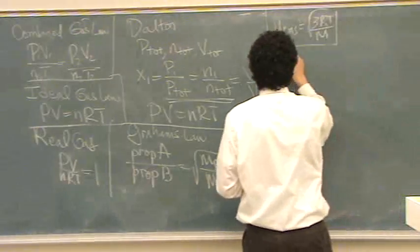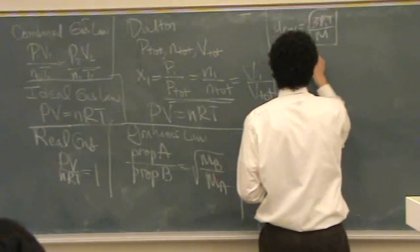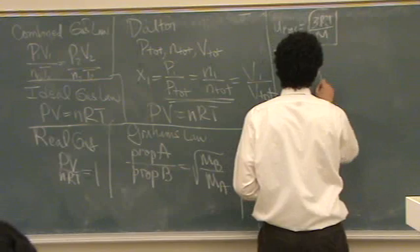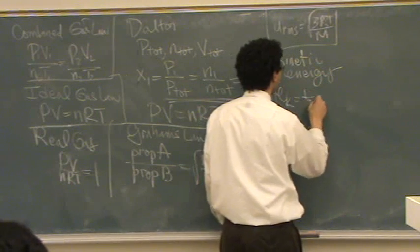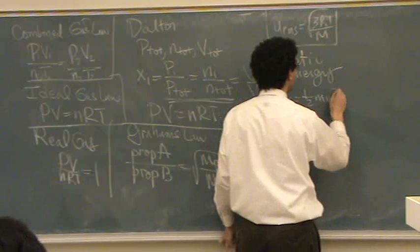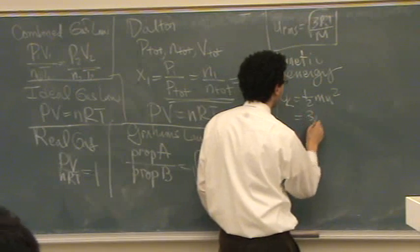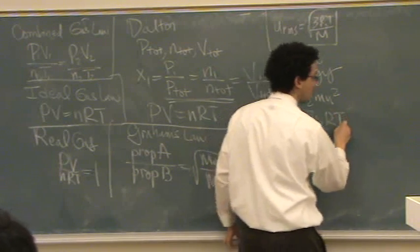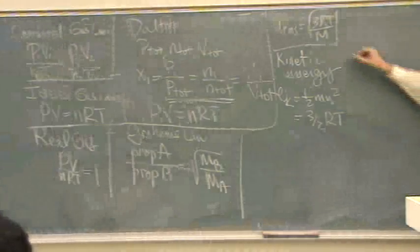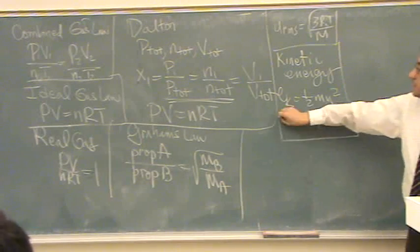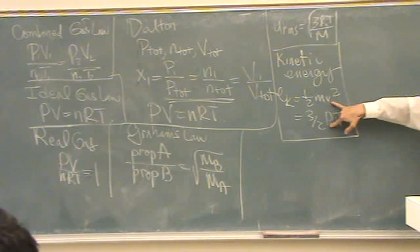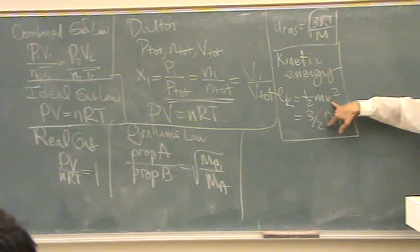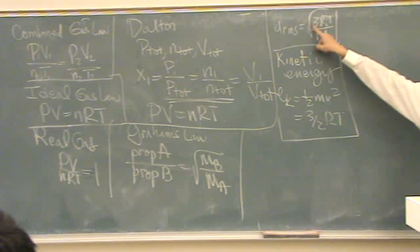And then the last, kinetic energy, or maybe there might be more, but right now kinetic energy. So E sub K is one half M U squared, or three halves R T. So there's two equations for the kinetic energy, just depending on what you're given. And really if you put these two equations together and solve for U, that's where this one comes from.